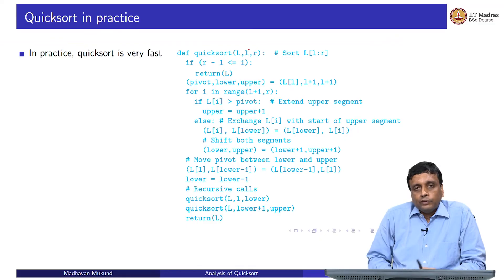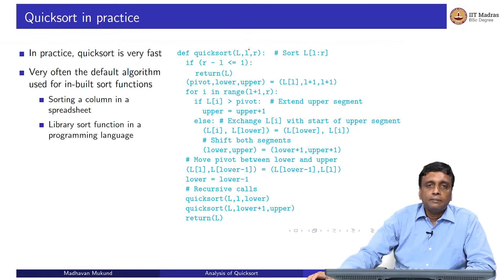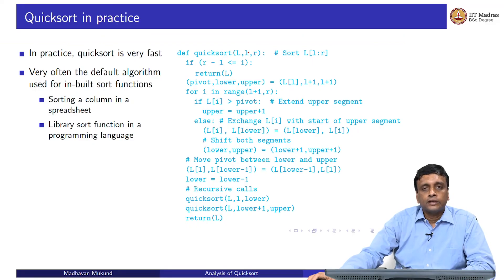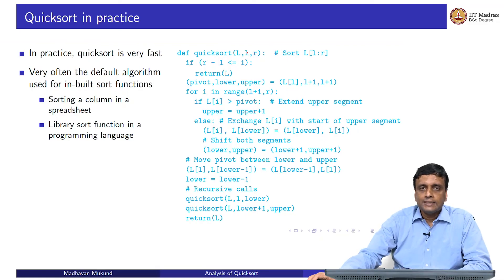Given all this, you might ask why are we so interested in quicksort? It turns out that quicksort, despite its order n squared upper bound, is actually very fast in practice. In many situations, you use built-in sorting - you take a spreadsheet column and say sorted, or you might have a sort function like in Python. In many such cases, quicksort is the algorithm that is used.